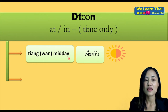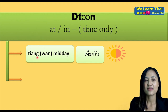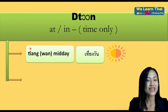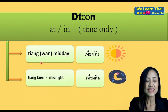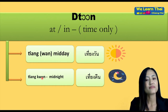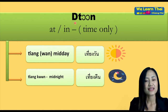Midday, or you can just say noon. So to say 'at noon' or 'at midday' you will say 'thawn tiang' or 'thawn tiang wan'. Next, the word 'tiang koon' means midnight, so at midnight you will say 'thawn tiang koon'.